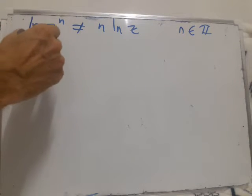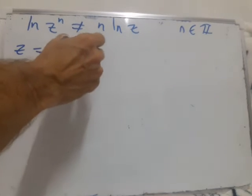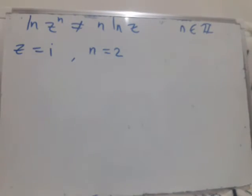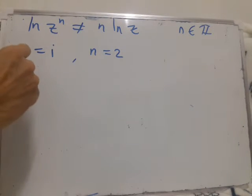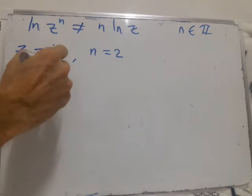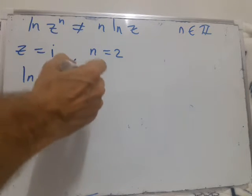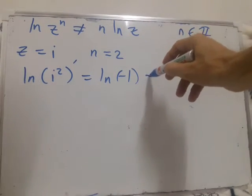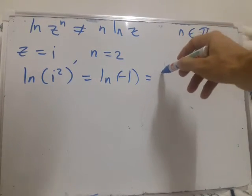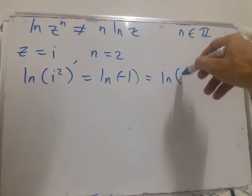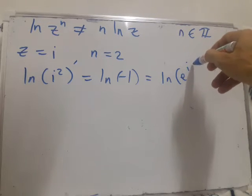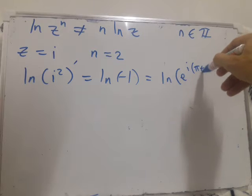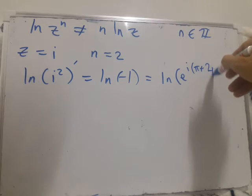Suppose z equals i and n equals 2. Let's look at what the left hand side gives. We've got log of i squared, which is log of minus 1, which is log of e to the i pi plus 2p pi.